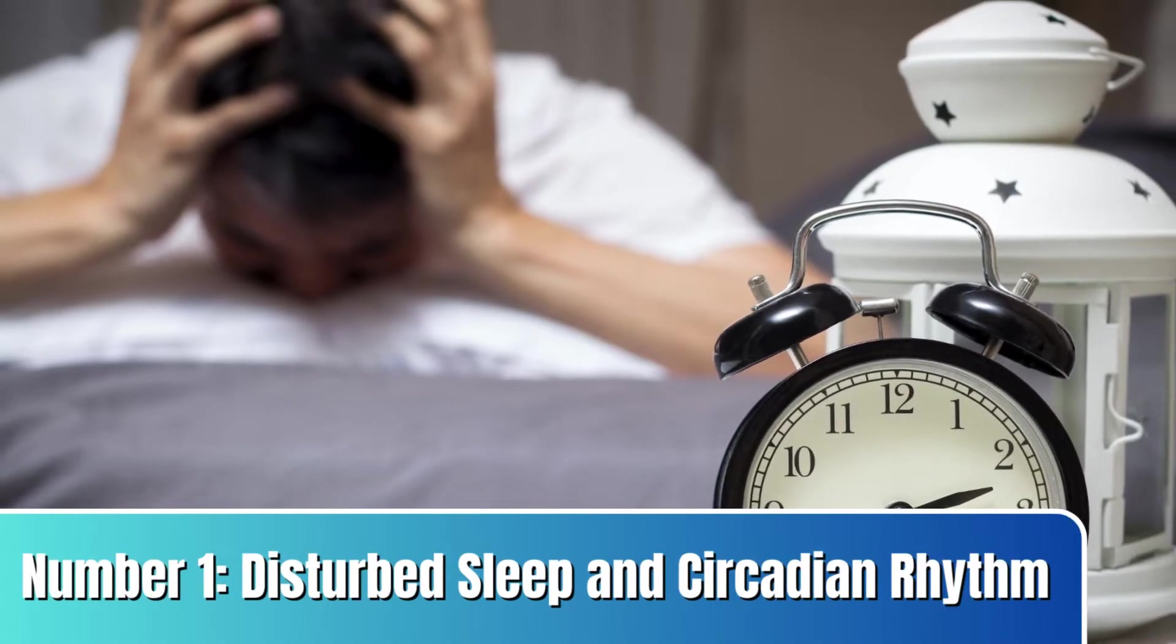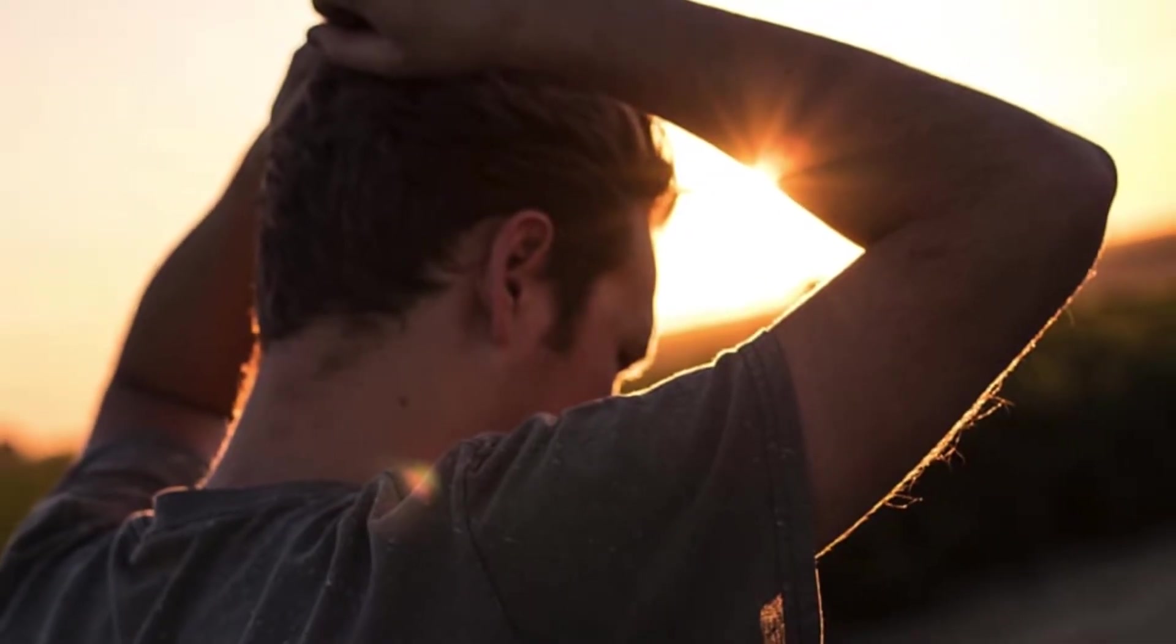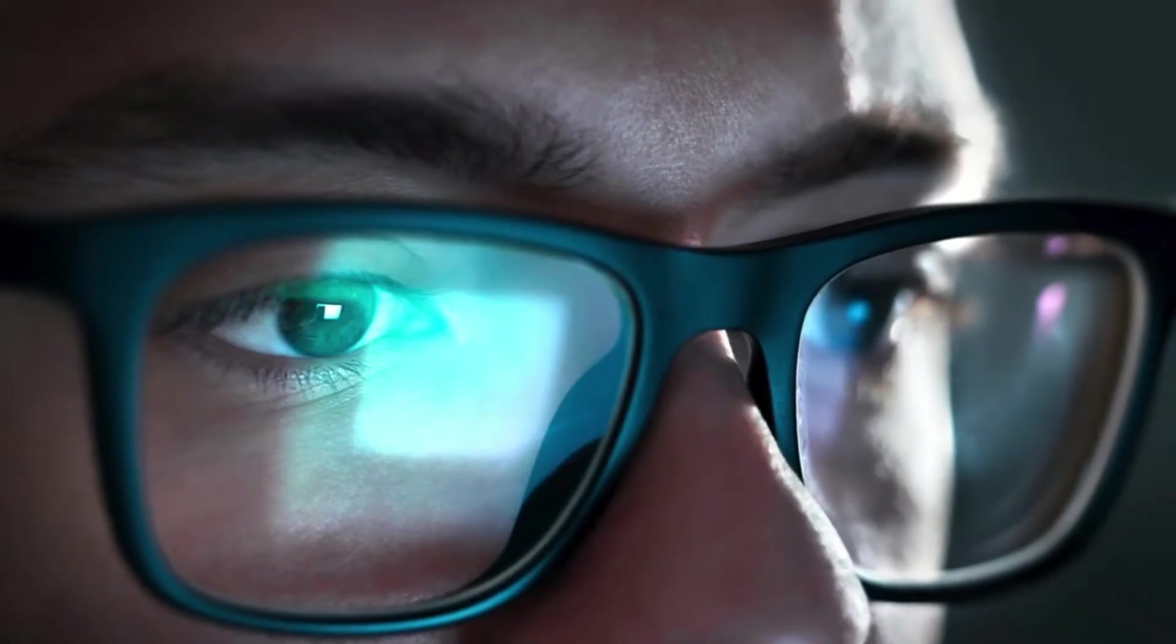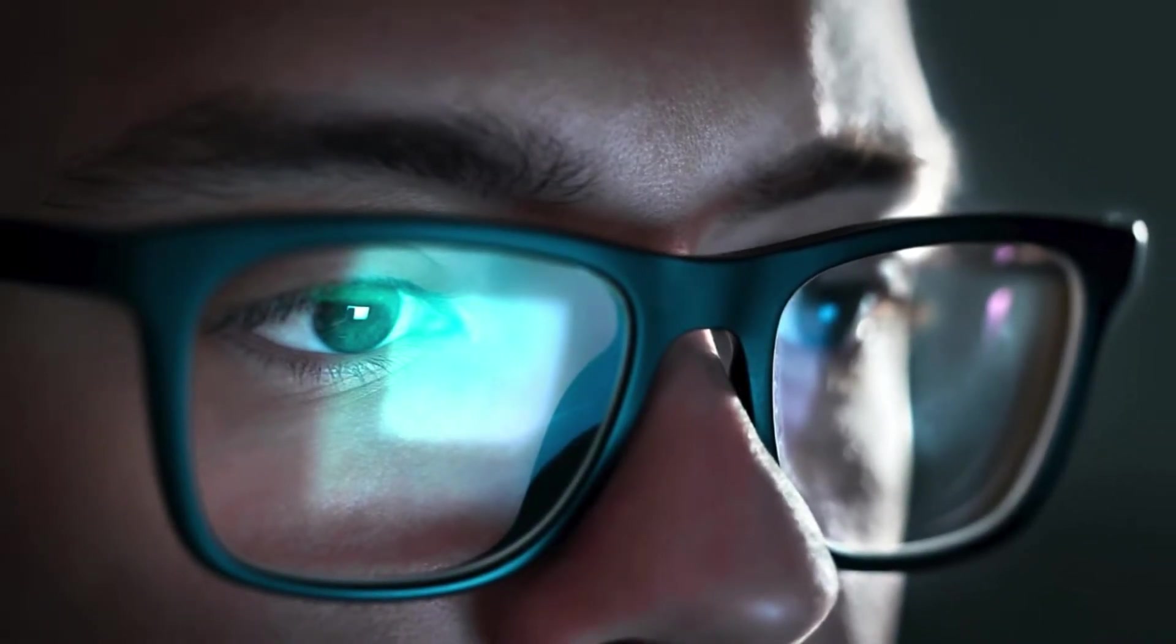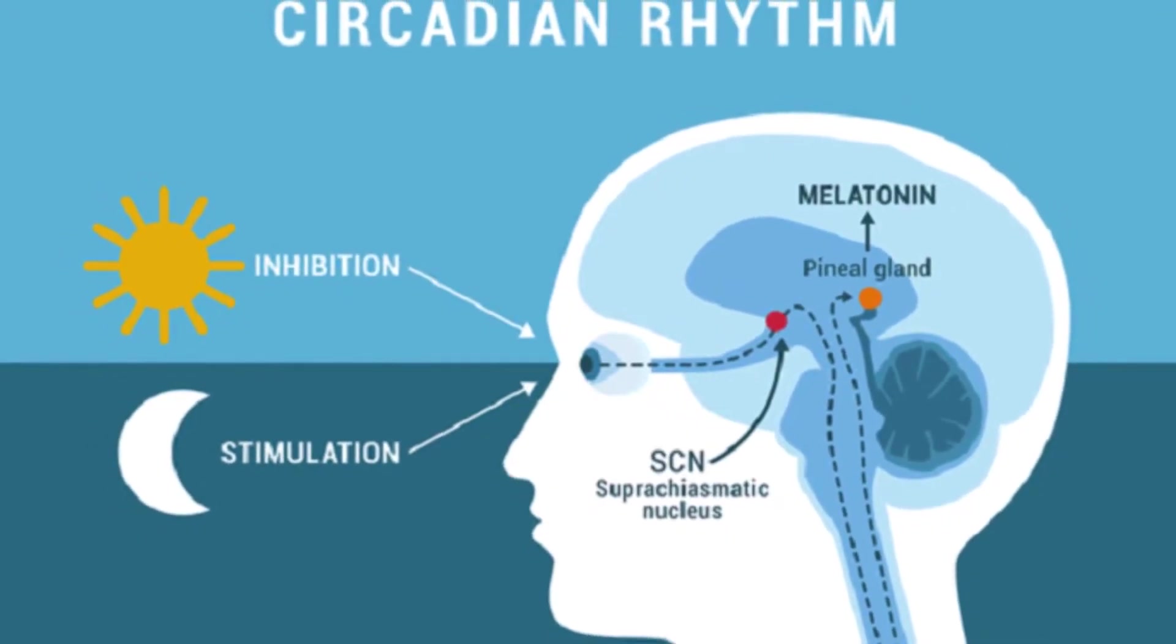Now let's learn about the potential downsides of blue light. Number 1. Disturbed sleep and circadian rhythm. While morning sunlight containing blue light works wonders for your brain and mood, the same light source becomes problematic when experienced throughout the day and especially at night.